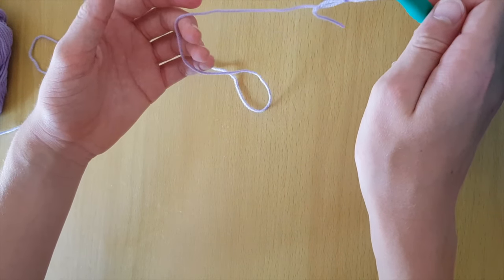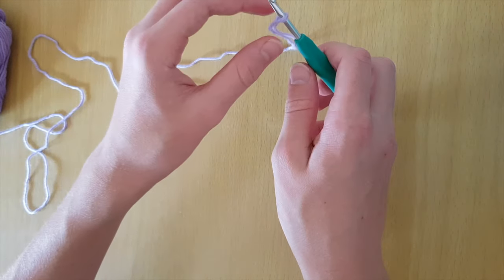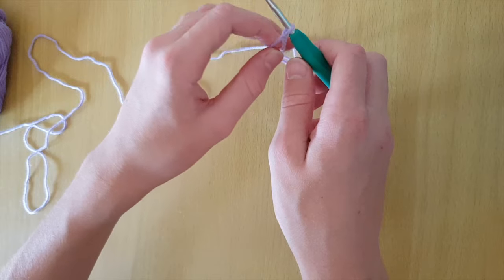Then grab the long end of the yarn and pull the knot closer to your hook. Make sure that you don't pull it too tight to your hook so that it can still move up and down freely.